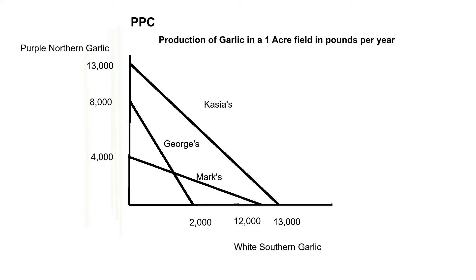The point here is that northern garlic is better suited for Vermont — let's say George's field — where southern garlic is better suited for Florida, Mark's field. Although Mark could grow northern garlic, he'd have to put up some sort of tunnel and simulate conditions in the north. Whereas George could grow this white southern garlic, but he'd have to put up a greenhouse or tunnels or netting that would simulate warmer conditions in the south.